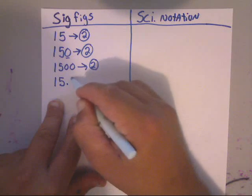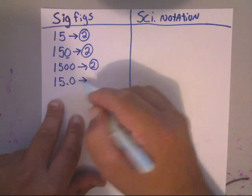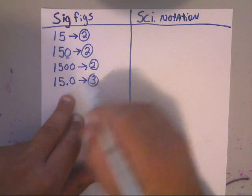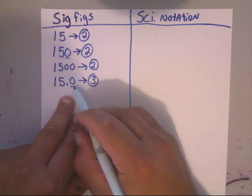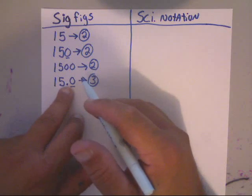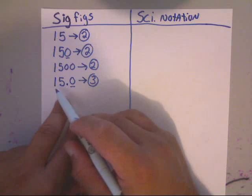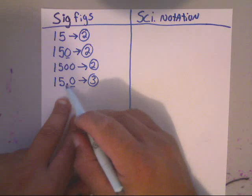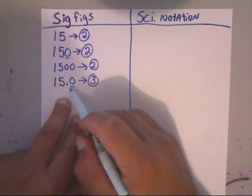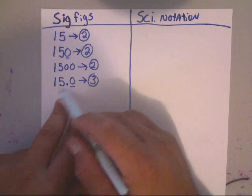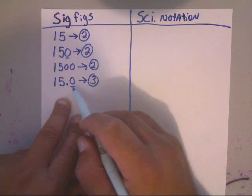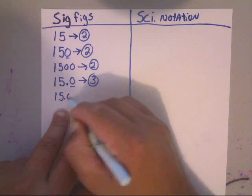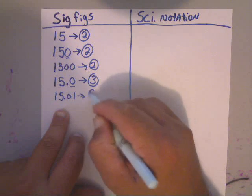Now, let's say you have the number 15.0. When you get a decimal in there, things are different — here there are three sig figs. This zero is not trailing anymore because it's on the back end, but that decimal changes everything. We don't know if this number was rounded up or rounded down to get 15.0. Therefore, they took time out to measure one decimal place for a particular reason, so it must be important. That's why that's not a trailing zero, but the other ones are.